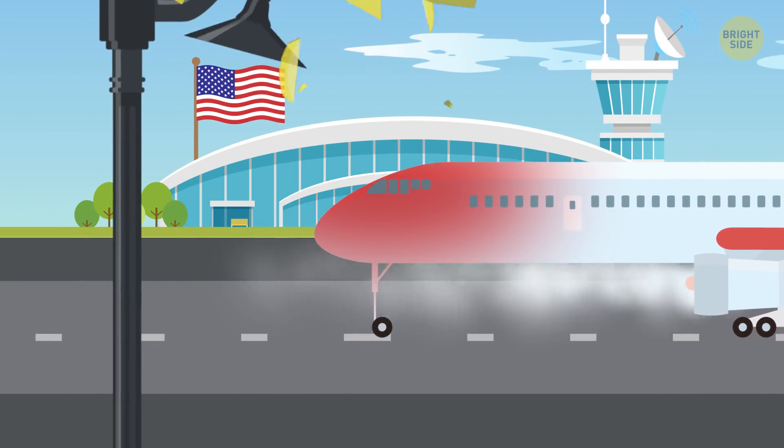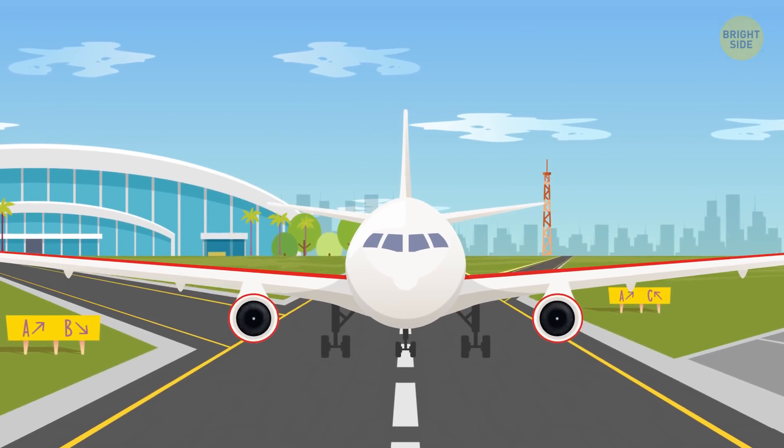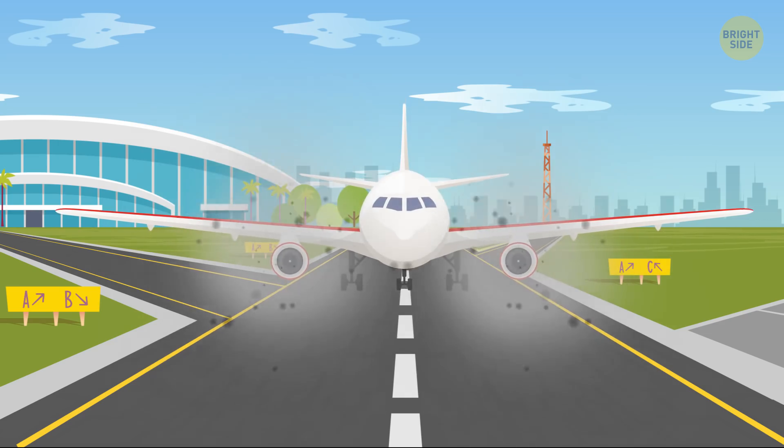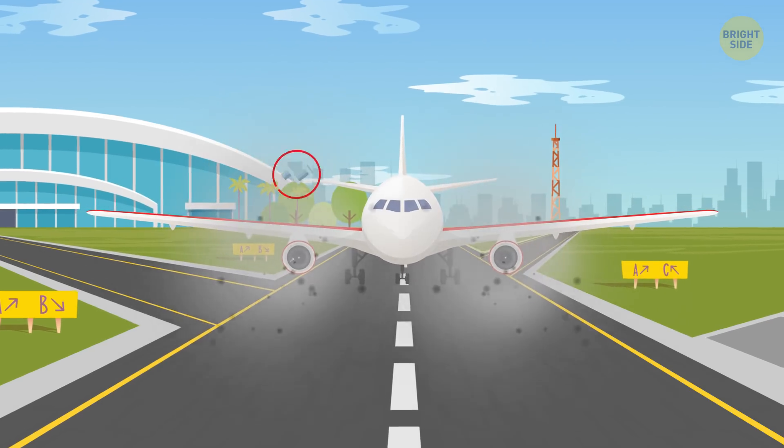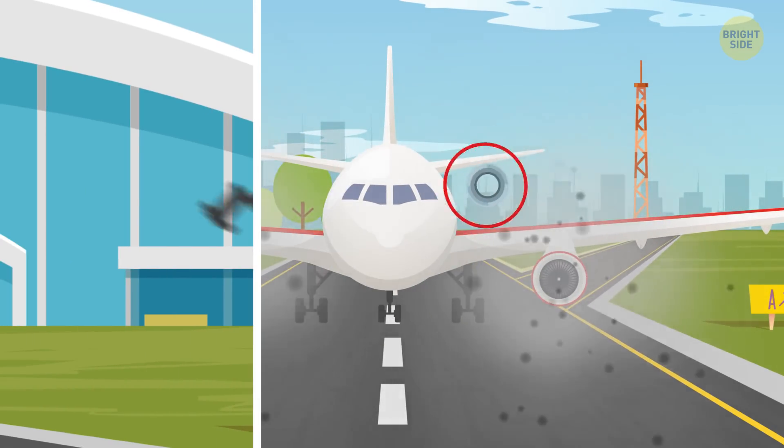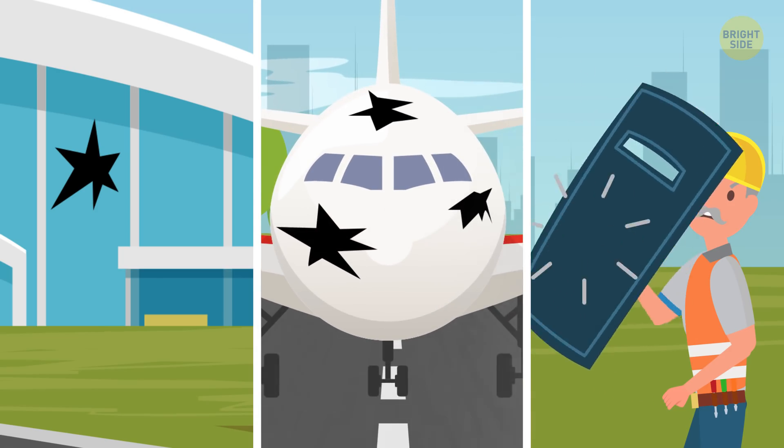Secondly, an engine running at full reverse thrust is a serious safety risk. Powerful airstreams propel debris lifted from the ground at incredible speed. Small metal objects are the most dangerous among them, because they can crack terminal windows, hurt ground personnel, and even hit the fuselage of the plane itself.